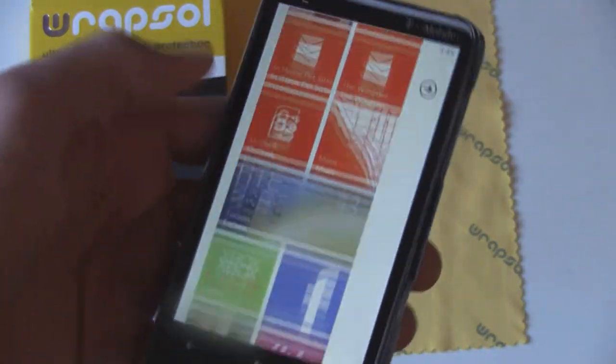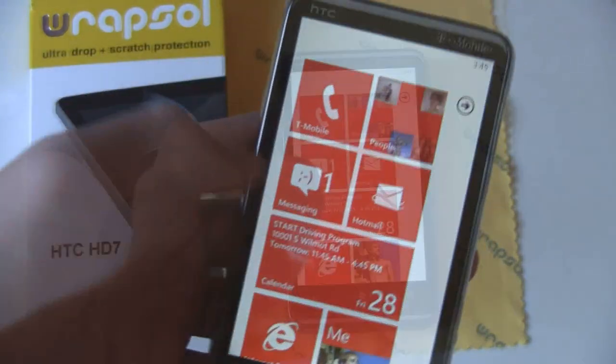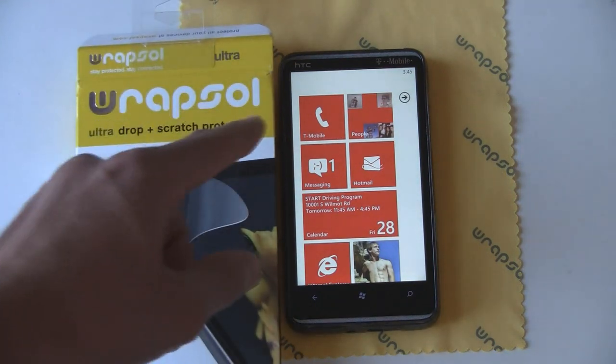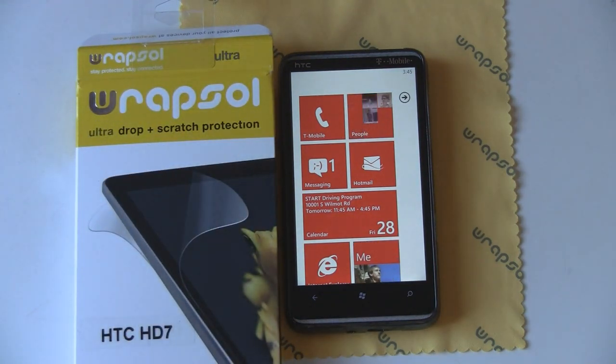And keep the original touch and feel of the device. If you want to try Rapsil yourself, you can pick it up at Rapsil.com, and it's available for most Windows Phone 7 devices.